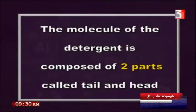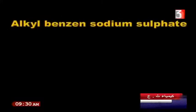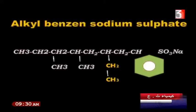What is sulfonation? The molecule of the detergent is composed of two parts called tail and head. The tail has a long carbon chain which is hydrophobic. The head is an ionic group which is hydrophilic. What does this mean? It means alkyl benzene sodium sulfate CH3, CH2, CH2, CH, CH2, CH, CH2, CH connected by all of this, SO3Na.